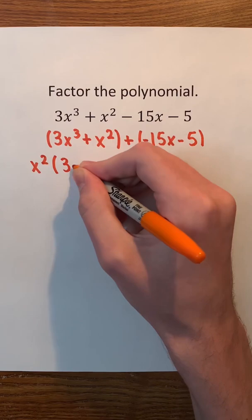Then, we can factor x squared from the first two terms, and we'll factor negative 5 from the last two terms.